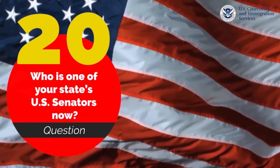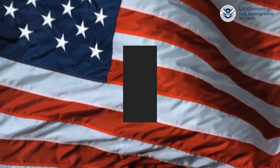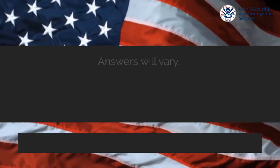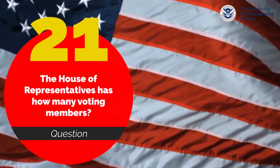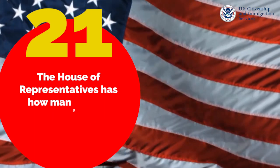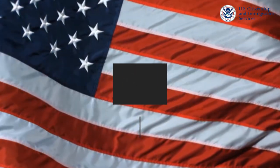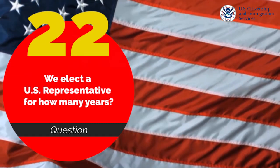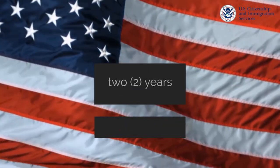Who is one of your state's U.S. Senators now? Answer can be different. District of Columbia residents and residents of a U.S. territory should answer that D.C. or the territory where the applicant lives has no U.S. Senators. The House of Representatives has how many voting members? Four hundred and thirty-five. We elect a U.S. Representative for how many years? Two years.